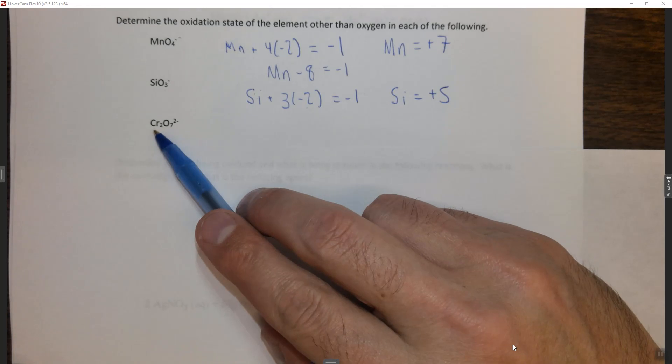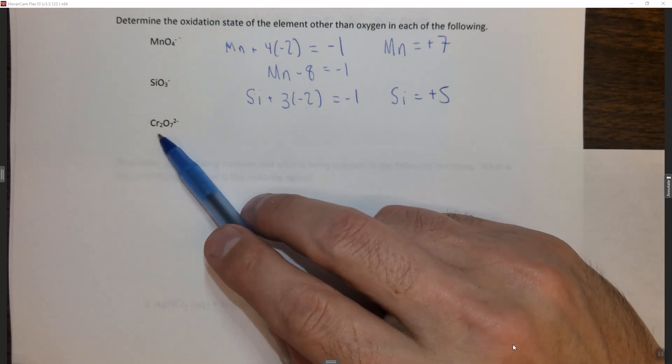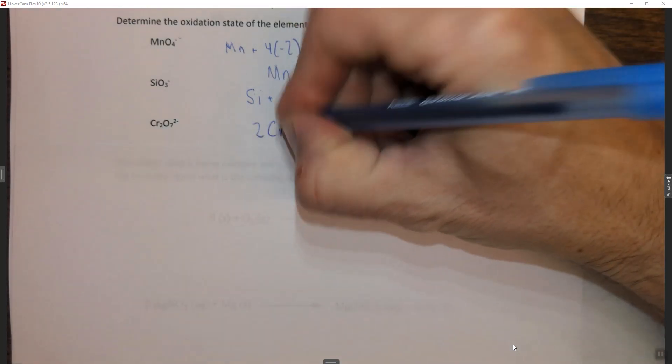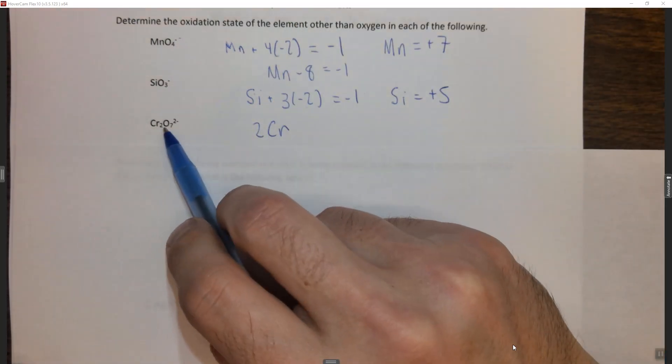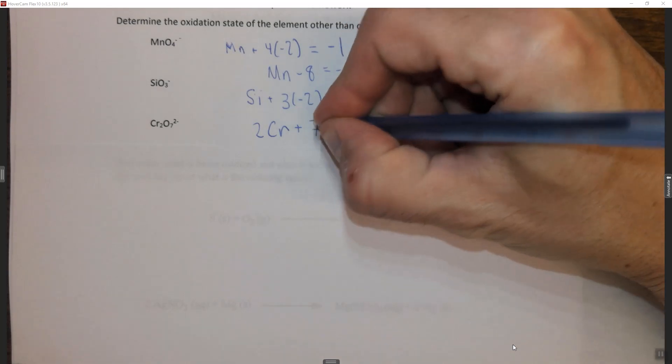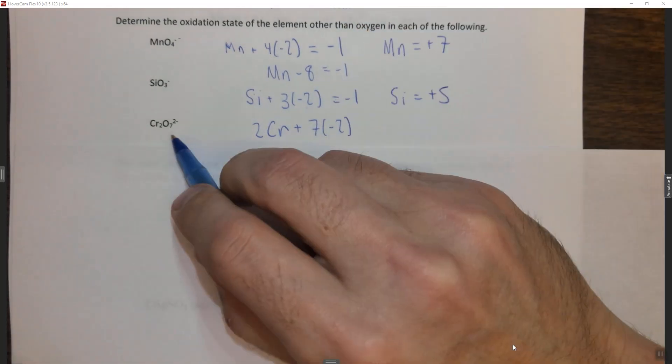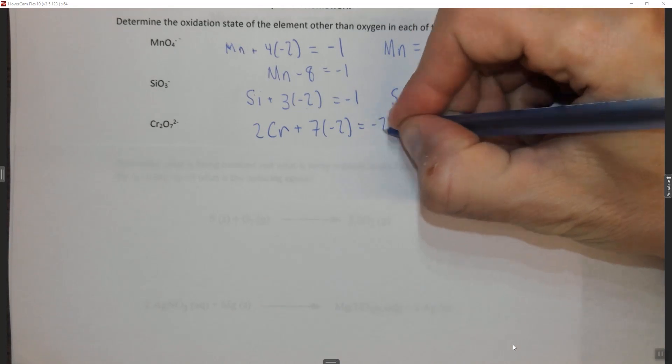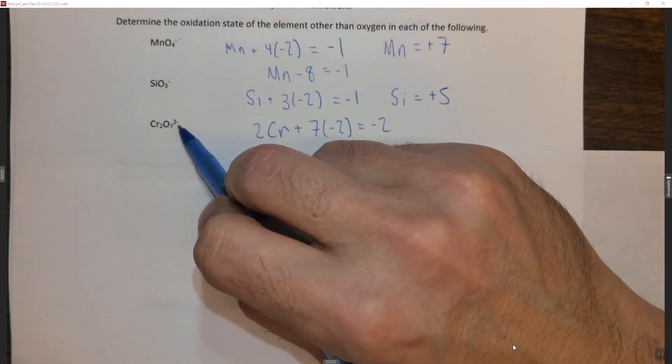Here we have a dichromate. So this one is a little bit different but it's basically the same idea. We again have oxygen. So this time it's two Cr. Why two Cr? Because there's two of them. Plus seven times minus two, seven oxygens, each with a minus two oxidation state, equals minus two because it's a two minus charge.